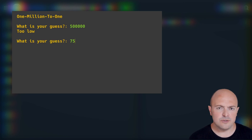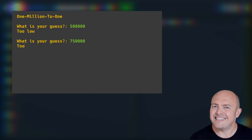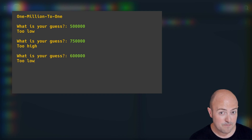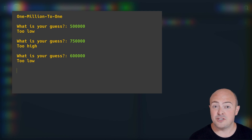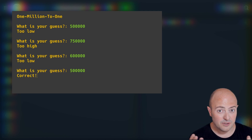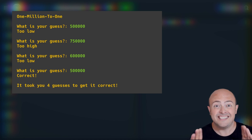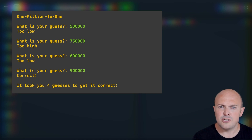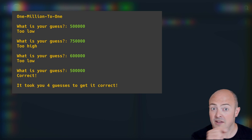You're then going to use a while loop to keep asking the user to guess what that number might be. If they guess a number too low, you're going to tell them too low. If they guess too high, you're going to tell them too high. And if they get it right, you're going to tell them they've won.